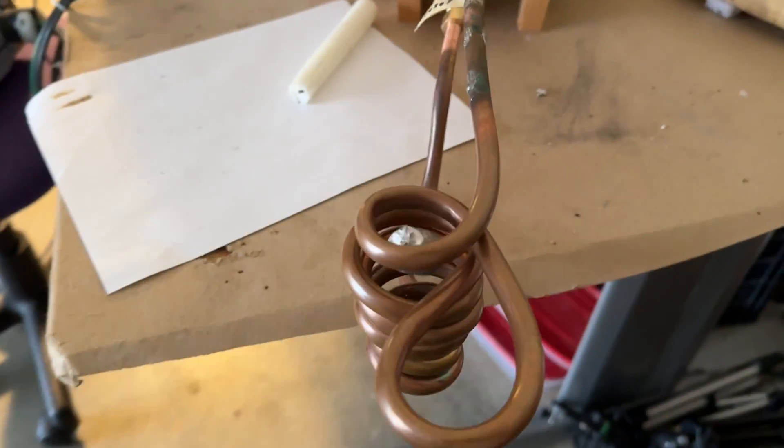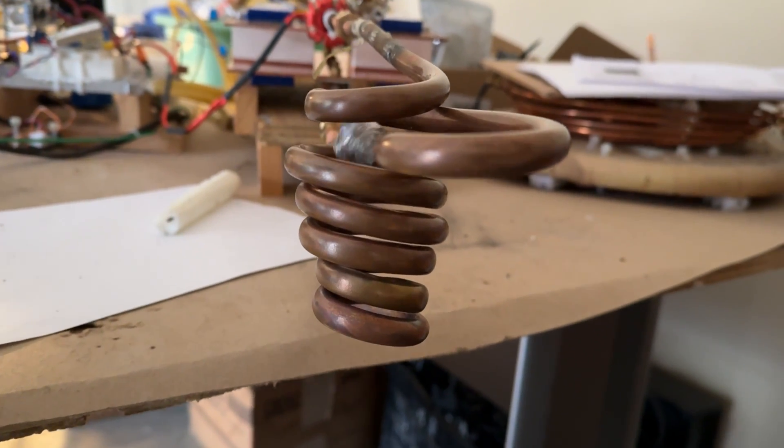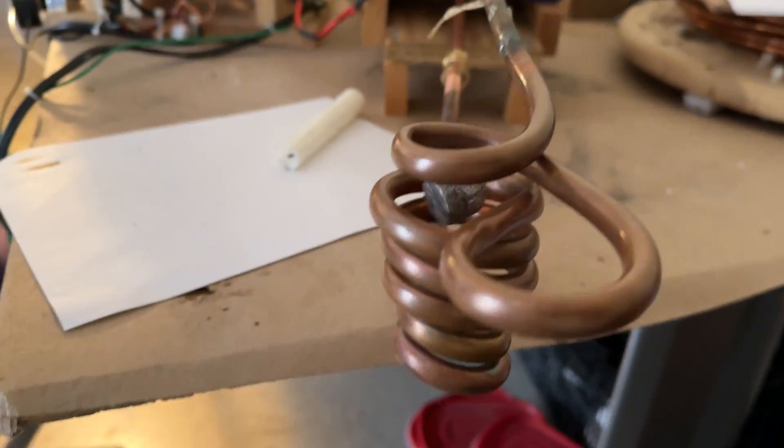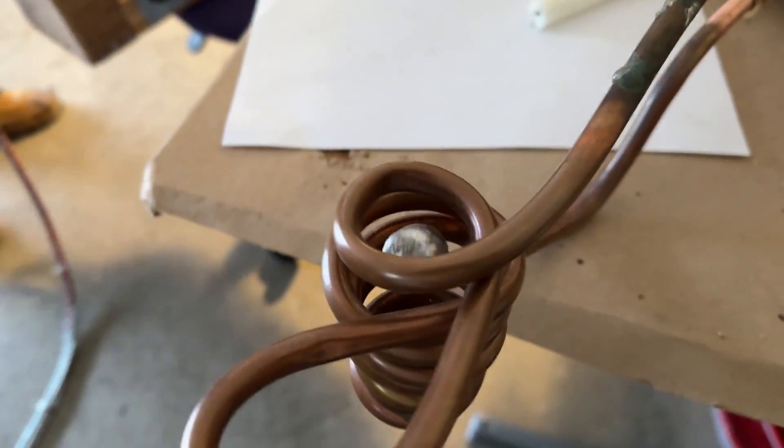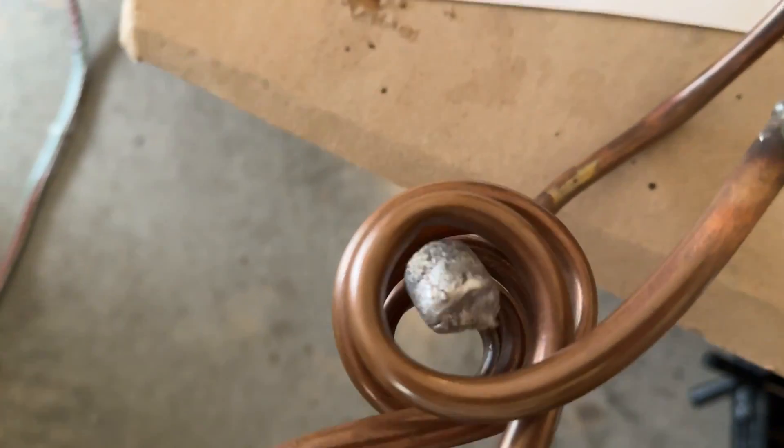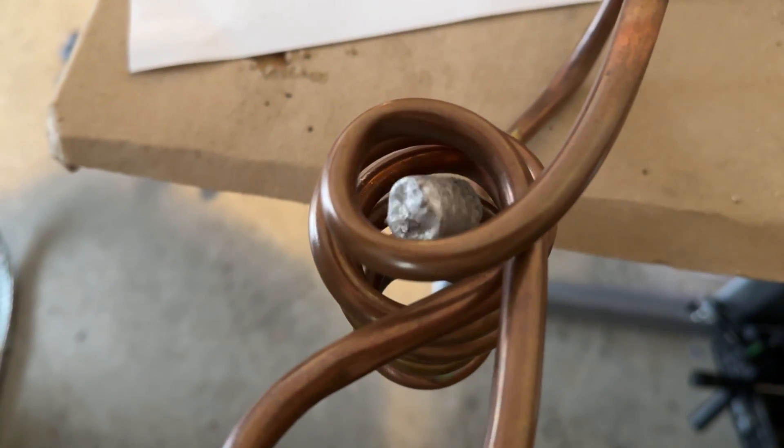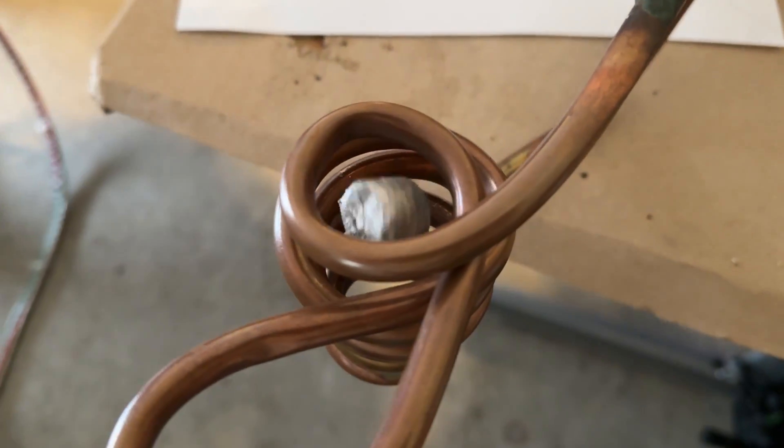As you can see, that piece of aluminum is floating in that coil. Now I'm going to get a thermal meter going to make sure that none of the components on the induction heater are overheating, which would result in failure of the system. Eventually that aluminum will get hot enough to glow and you're going to see that happen.